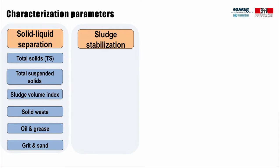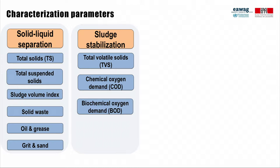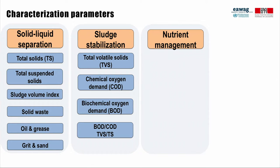For technologies designed for sludge stabilization, total volatile solids (TVS), the chemical oxygen demand (COD), and the biochemical oxygen demand (BOD) are important parameters. BOD and COD are for example important for the design of waste stabilization ponds used for treatment of effluents from solid-liquid separation technologies such as settling thickening tanks or drying beds. The ratio of BOD and COD and TVS and TS can also be used as an indicator for the relative biodegradability of organics in fecal sludge, which affects biological treatment processes.